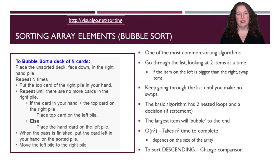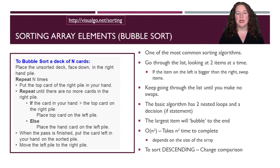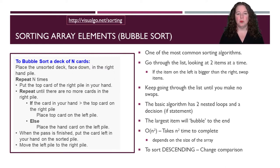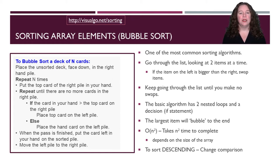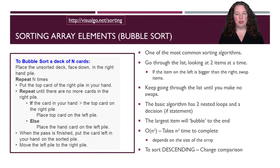The basic algorithm is written in pseudocode. We're going to do a loop — usually a for loop — multiple times. Put the top card of the right-hand pile into your hand. Repeat until there are no more cards. If the top card in your hand and the top card of the pile need to be switched, switch them. Otherwise, place your hand card on the left-hand pile and pick up another card. Keep doing this multiple times.